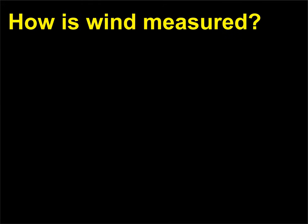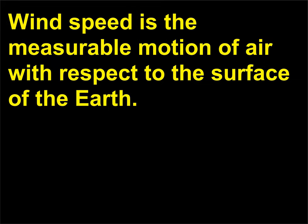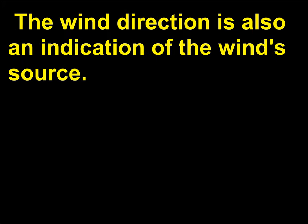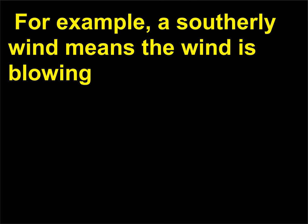How is wind measured? Wind speed is the measurable motion of air with respect to the surface of the earth. It is measured in terms of a unit distance over a unit time, such as miles per hour. The wind direction is also an indication of the wind's source. For example, a southerly wind means the wind is blowing toward north — it is coming from a southerly direction.